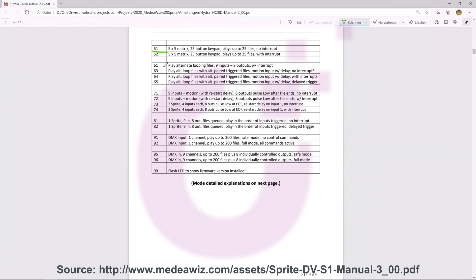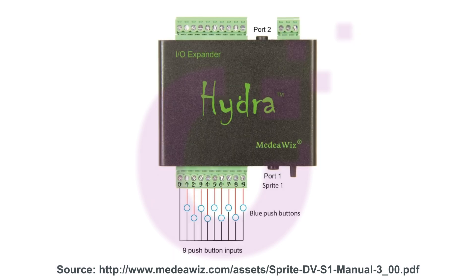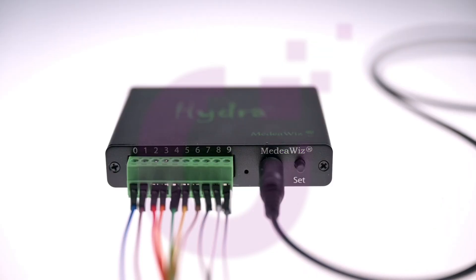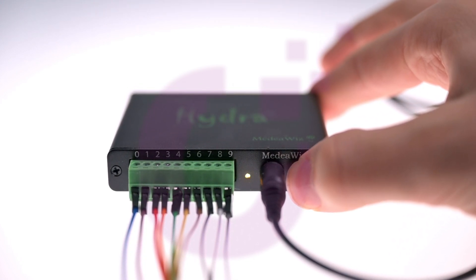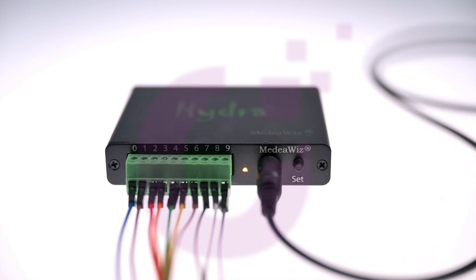We start with the 9 push buttons. We connect the buttons as follows and use mode 1. To change the mode on the Hydra we need to press and hold the set button during startup. Now we insert the first digit of our mode number — in this case, 1. We press the button once and wait until the LED turns yellow. Now we have entered all digits. After a short while the Hydra repeats our number — once: 1. The LED now lights permanently green. Mode 1 will be used until we change it again.